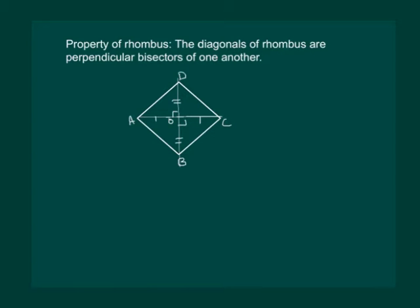Let us try to prove it. We know that if ABCD is a rhombus then it is also a parallelogram.